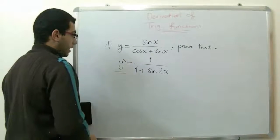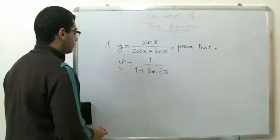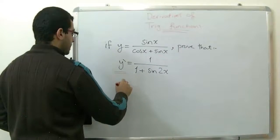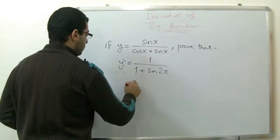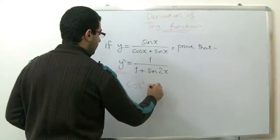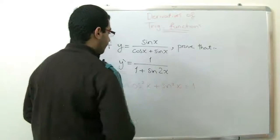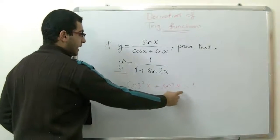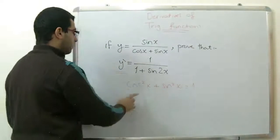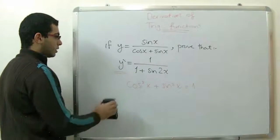Before heading on solving this problem, I want to emphasize the rule that says cosine squared x plus sine squared x equals 1. This expression equals 1, and we will use this expression much.